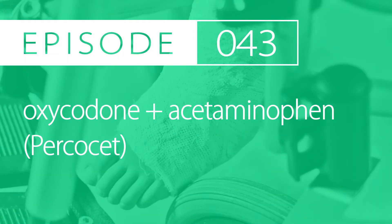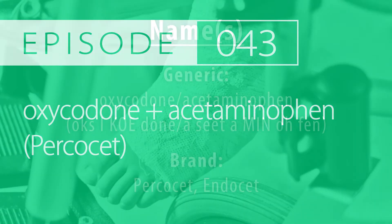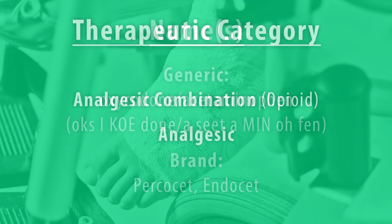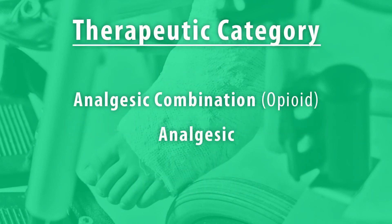Today's drug is oxycodone-acetaminophen. Brand names are Percocet and Endocet. The therapeutic category is an analgesic combination opioid, or simply an analgesic.